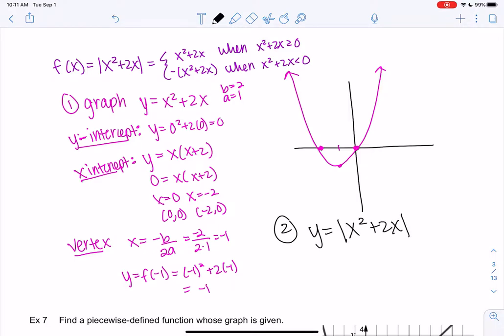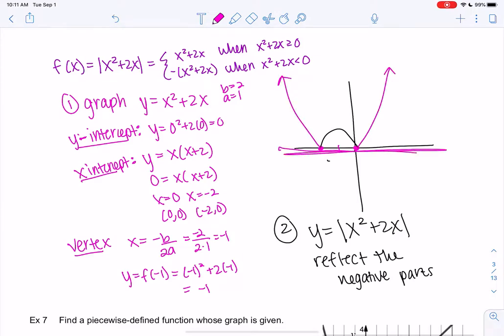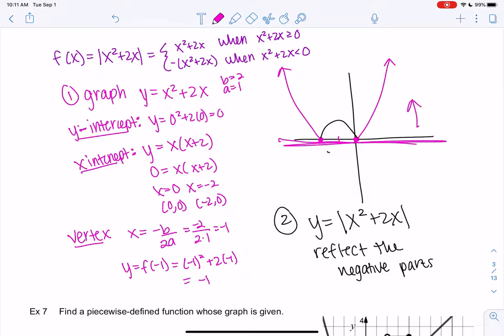So if we want to do the absolute value, all we really have to do is reflect the negative portions. So that would be this part. And I just reflect it. And that's the graph of an absolute value, right? It has to always be positive. So it'll always be on the upper half. So basically anything in the negative portion for y is going to be reflected because the y's need to be positive.